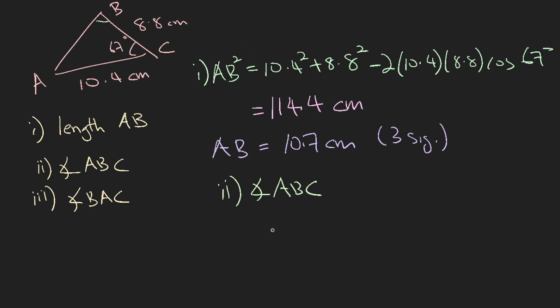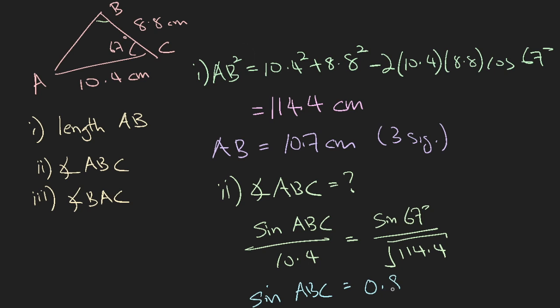Now, we will use sine rule. Sine of angle ABC over 10.4, the opposite side to the angle, is equal to sine of 67 degrees over the side you have found to be 10.7. So if you want your answer to be accurate to three significant figures, you need to make use of at least four. So coming from here, if we were to take square root of 114.4 and you make sine ABC to be the subject of the formula, multiply 10.4 to the other side, you will have 0.8963. So this is four significant figures.